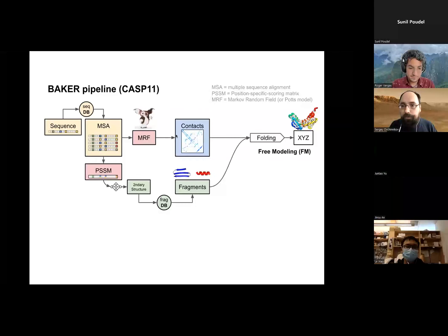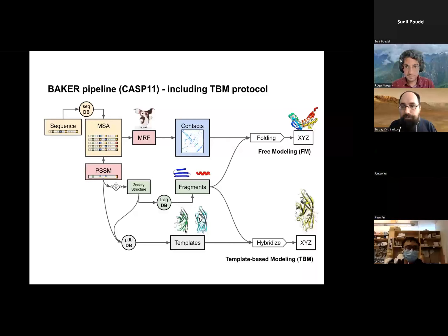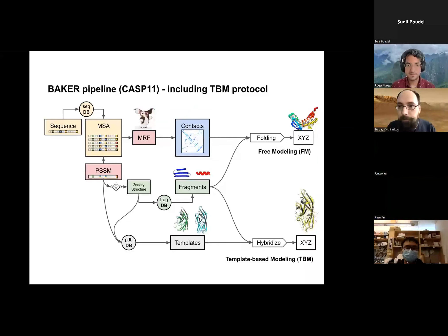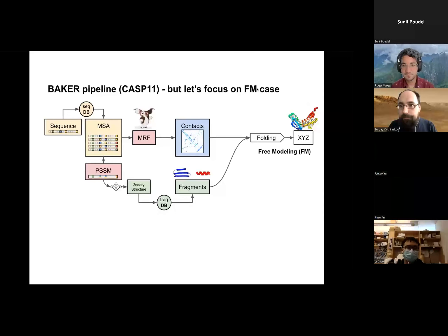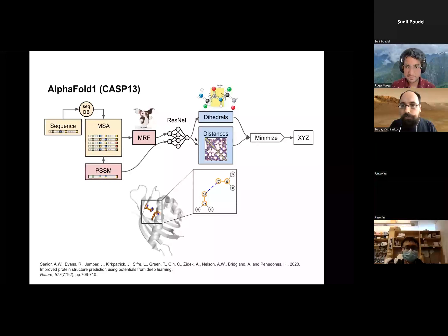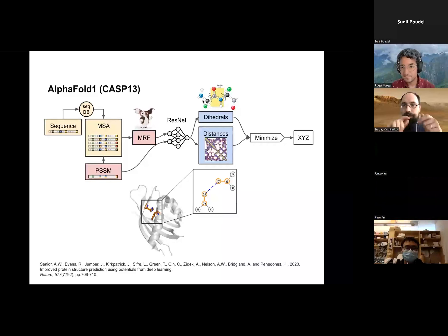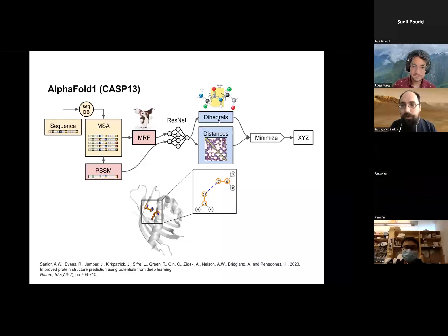In CASP 11, people started using this co-evolution context, and that helped in the process of folding. If you have templates, you could take the PSSM, search against a database, and if you find anything related, combine them to create the structure. One of the advancements in CASP 13 was to say: instead of going from a contact map and then folding up a structure, why not have a neural network take the information directly from the co-evolution models and predict the distances between every pair of residues, and also predict the backbone dihedrals. Then you can minimize to find the structure that matches these constraints.